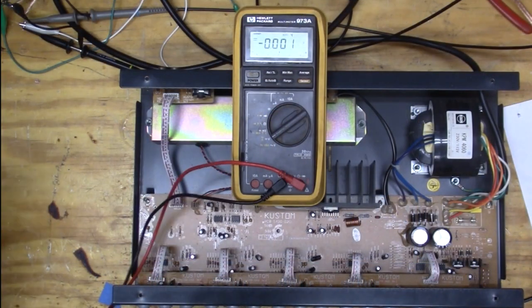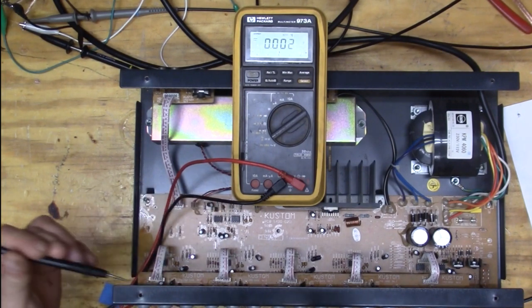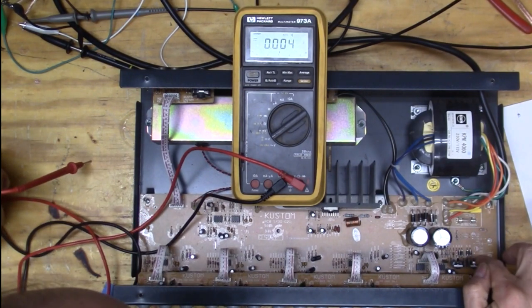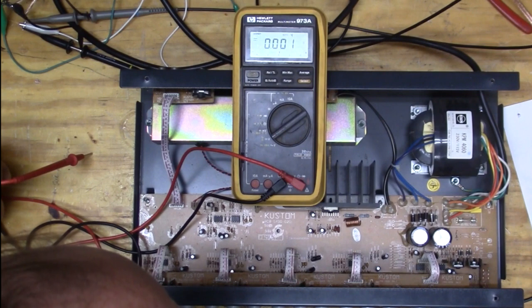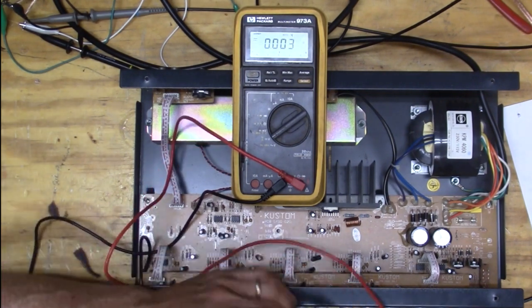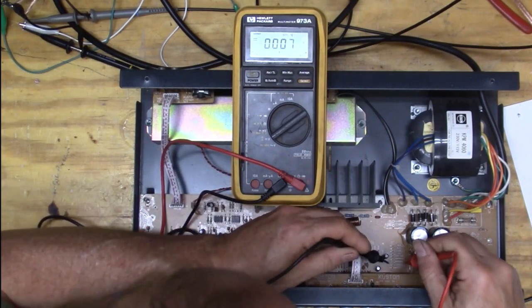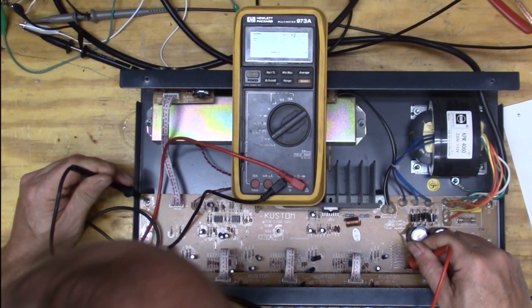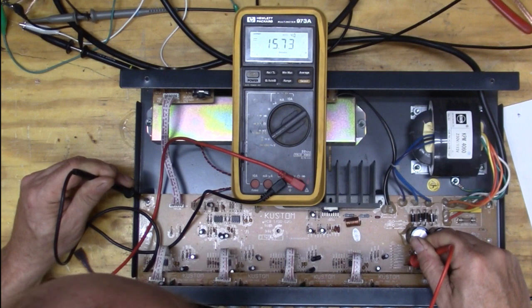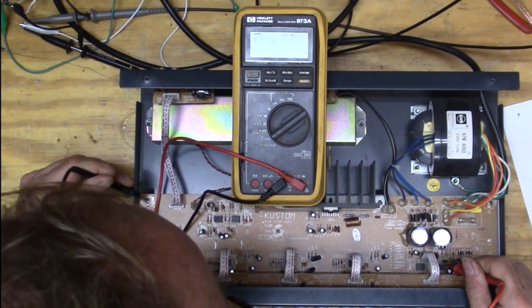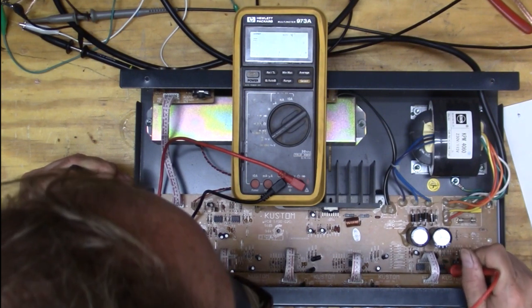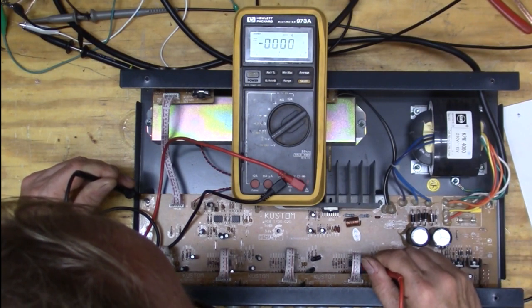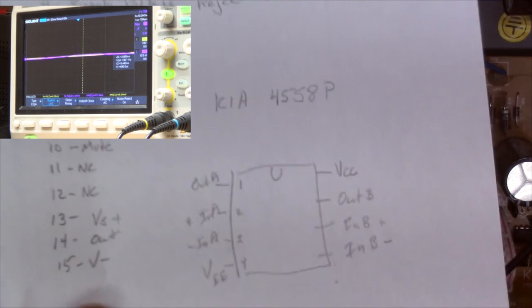One thing I think that's important to check is there's all these op amps in here and you always want to make sure that you've got, I think these regulators over here are probably plus and minus 15 volts. We've got 15 and minus 15 so that's good news.